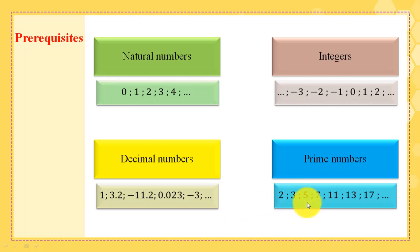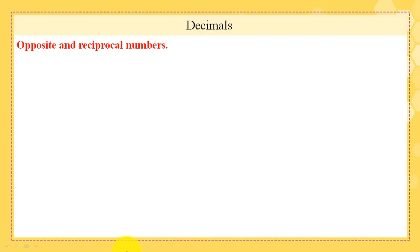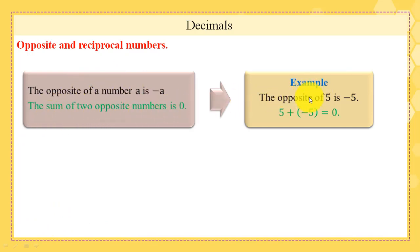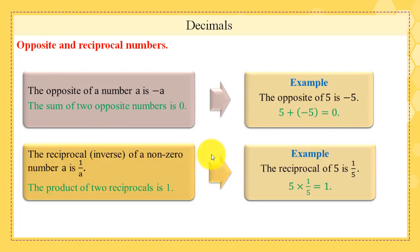Now we will talk about opposite and reciprocal numbers. First, opposite numbers: the opposite of a number a is −a. The sum of two opposite numbers is zero. As an example, the opposite of 5 is −5, since the sum of 5 and −5 is 0.